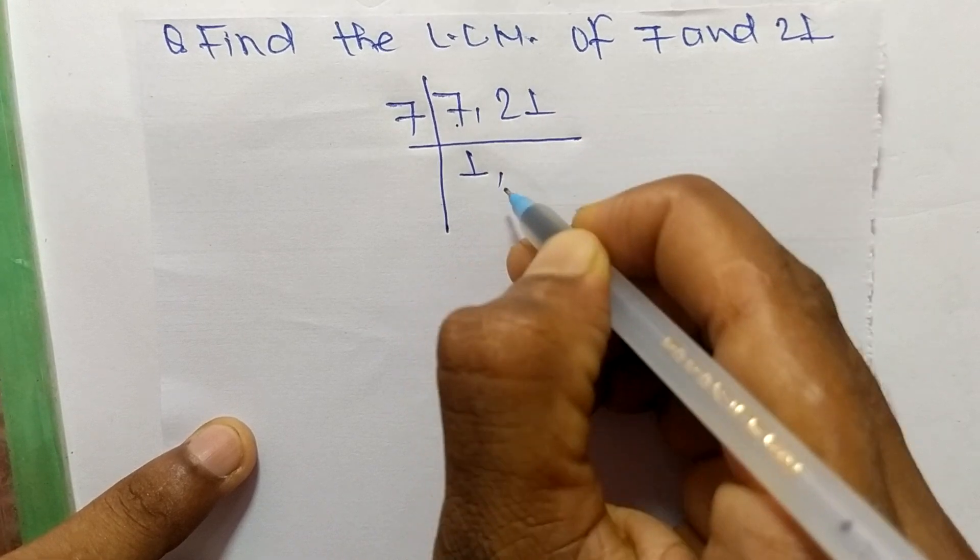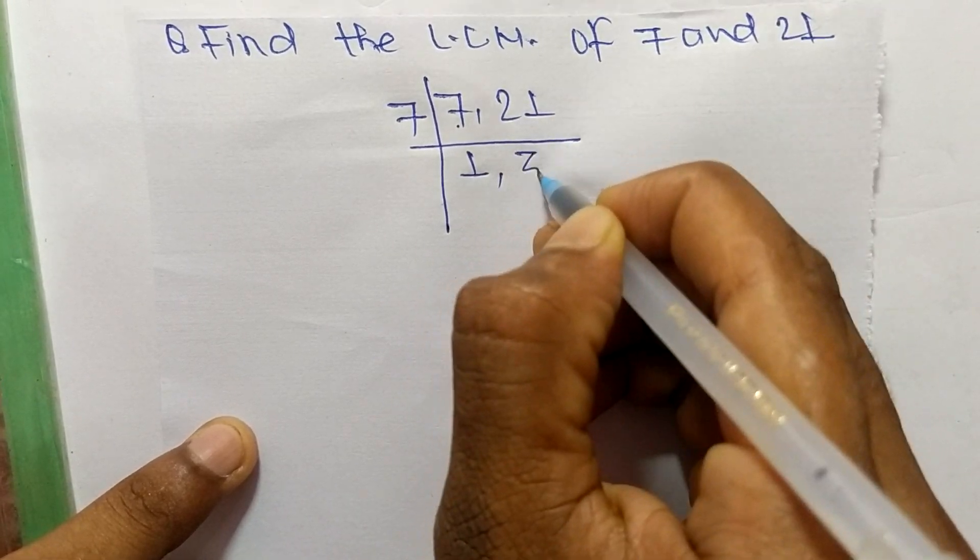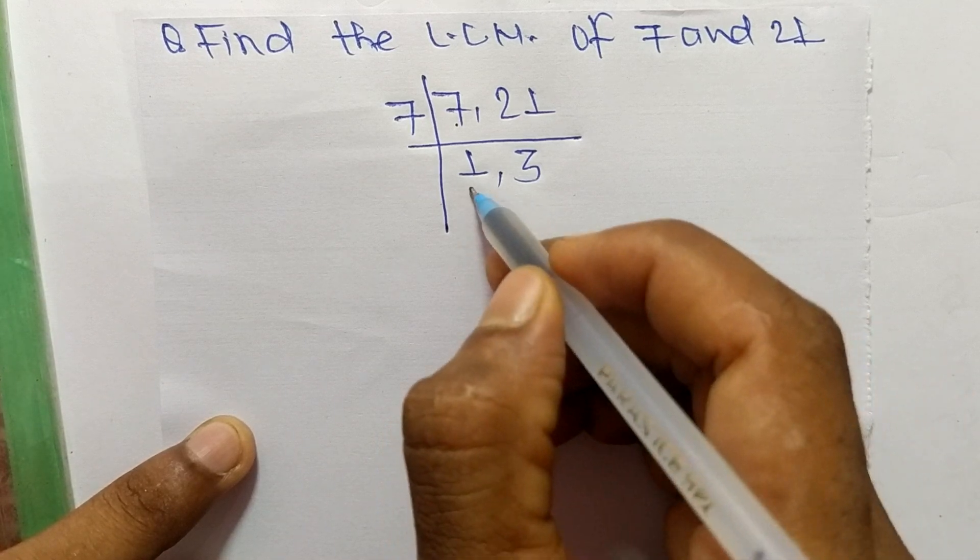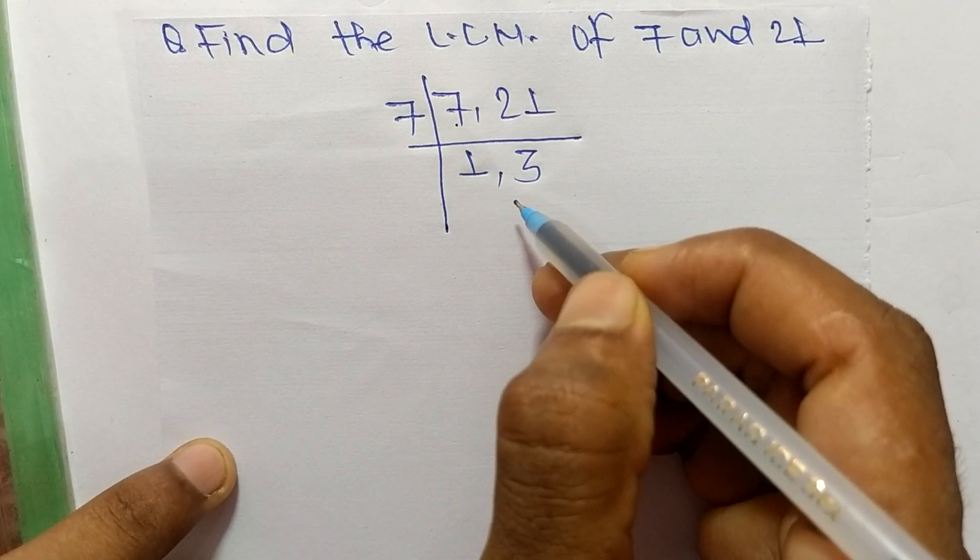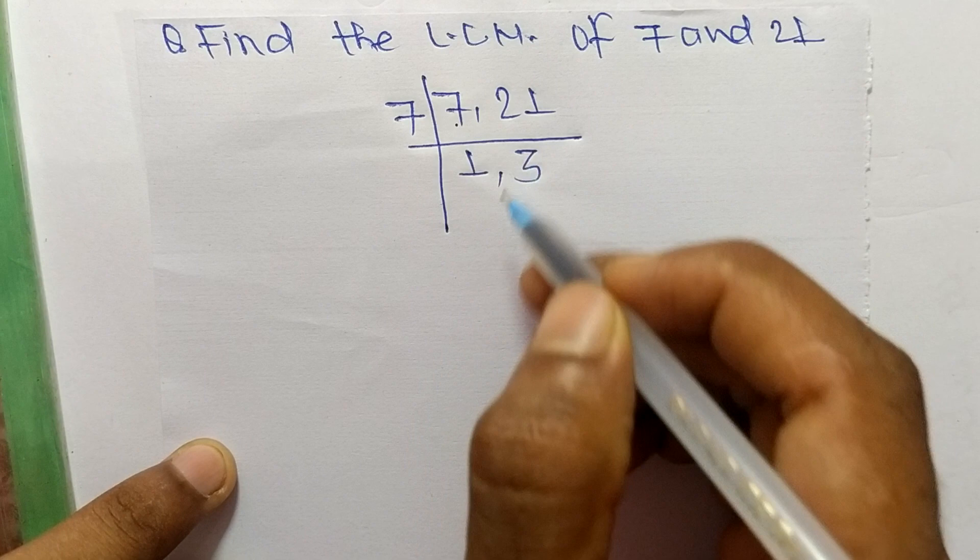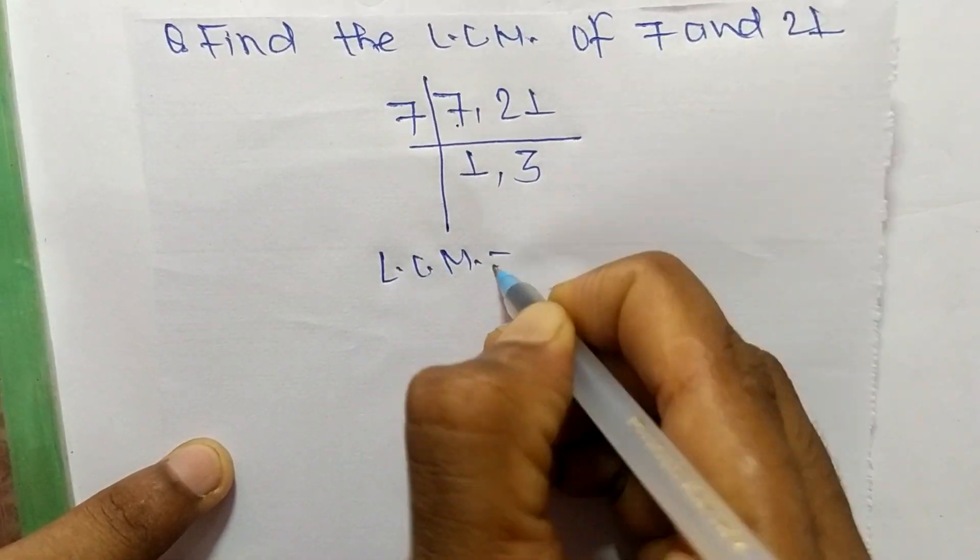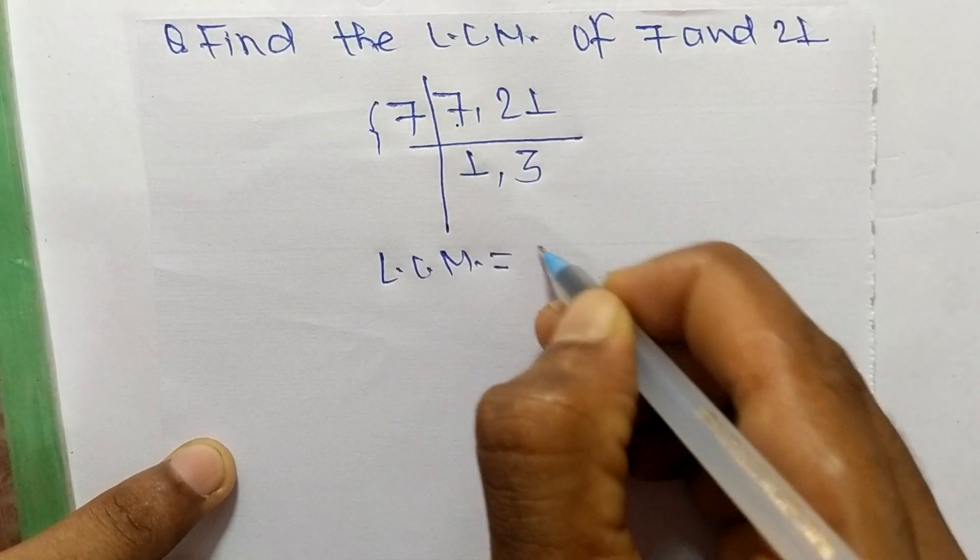It is 7 times 1 means 7, and 7 times 3 means 21. So now we get here 1 and 3, which are not exactly divisible by the same number. So its LCM is equal to, from this part it is...